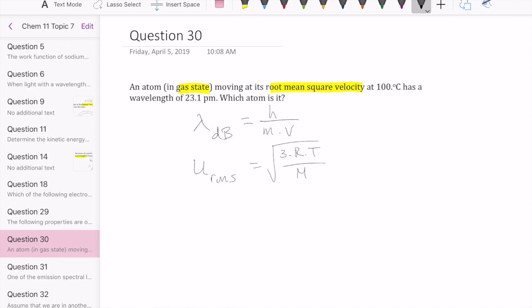And what we're trying to find is the atom itself. What is the atom that satisfies this particular condition? To know the atom, then I'm going to need the molar mass. And so we need to solve for M somehow. But how do we relate these two things together?